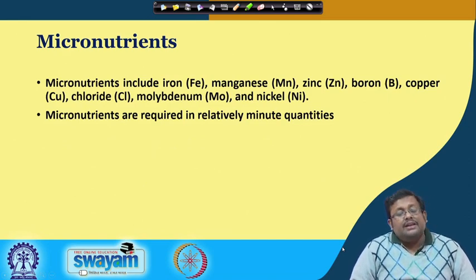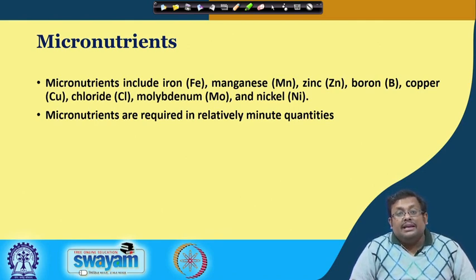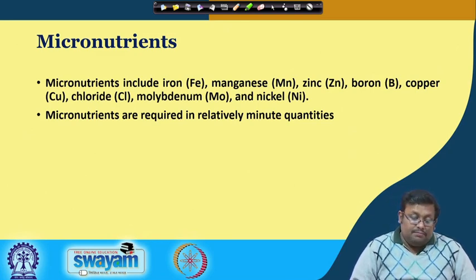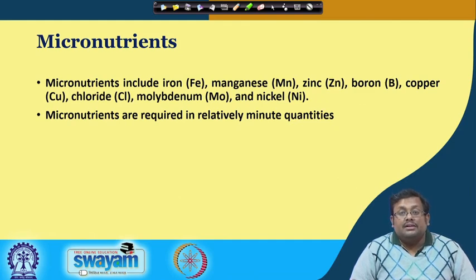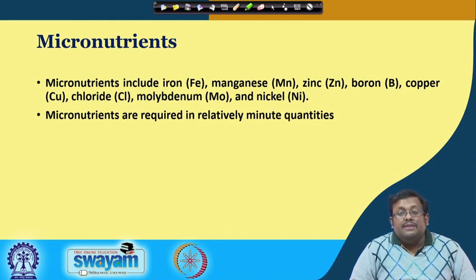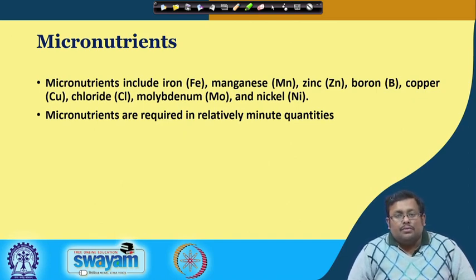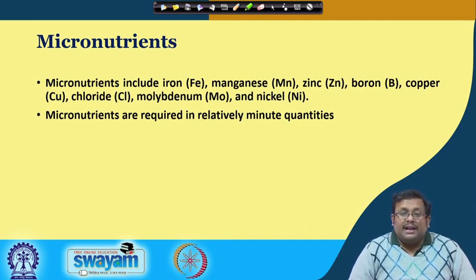The 8 micronutrients are iron, manganese, zinc, boron, copper, chloride, molybdenum, and nickel. Micronutrients are required in relatively very minute quantities, but regardless of their quantities, they are essential. Their absence will cause deleterious effects in the plant life cycle, and plants cannot complete their life cycle without their presence.